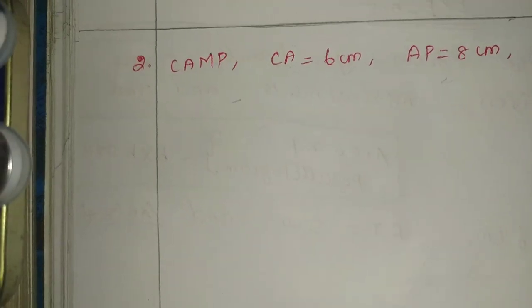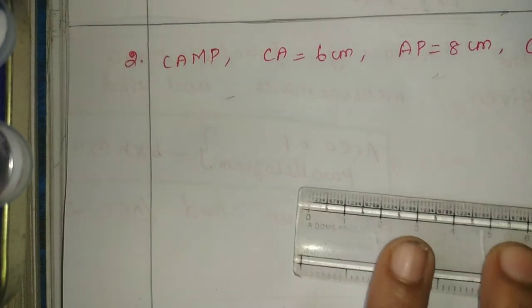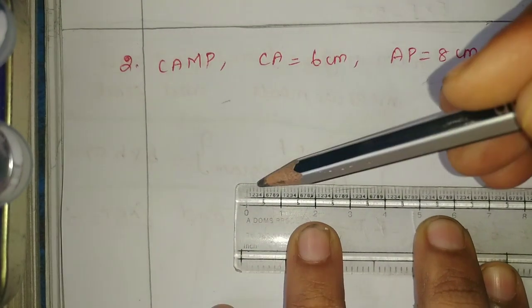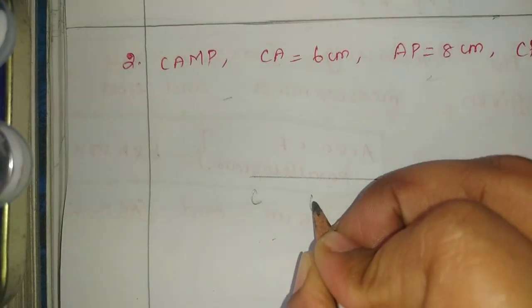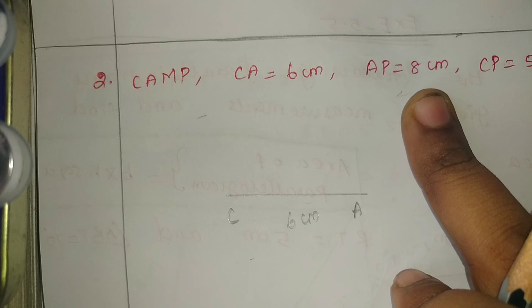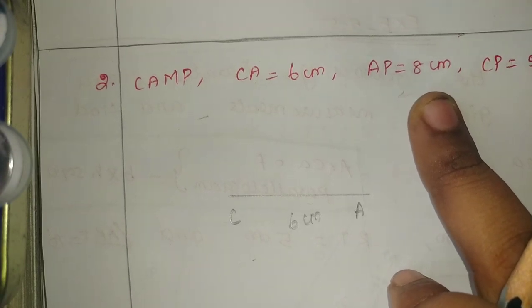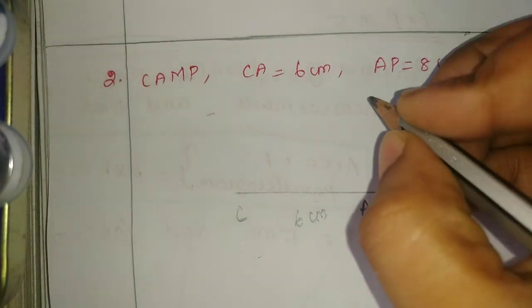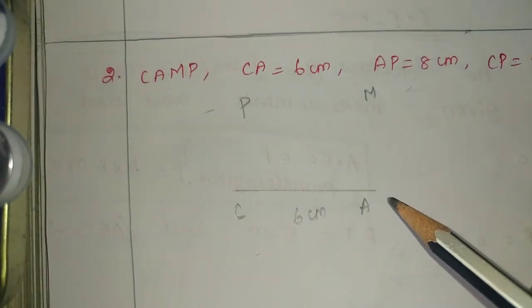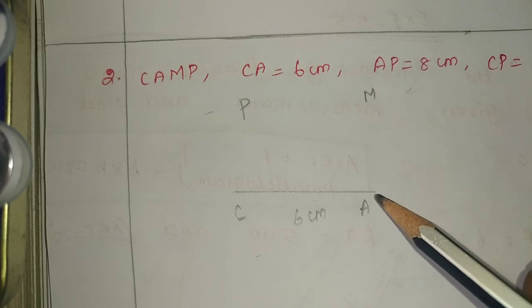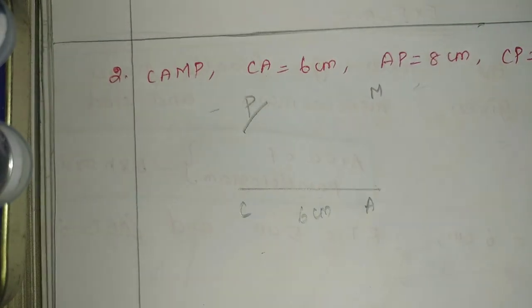So rough diagram, first CA equals 6 cm. CA 6 cm. Next step, AP equals 8 cm. CAMP. AP is the diagonal, CA to P is the diagonal. So A to P cut, 8 cm.